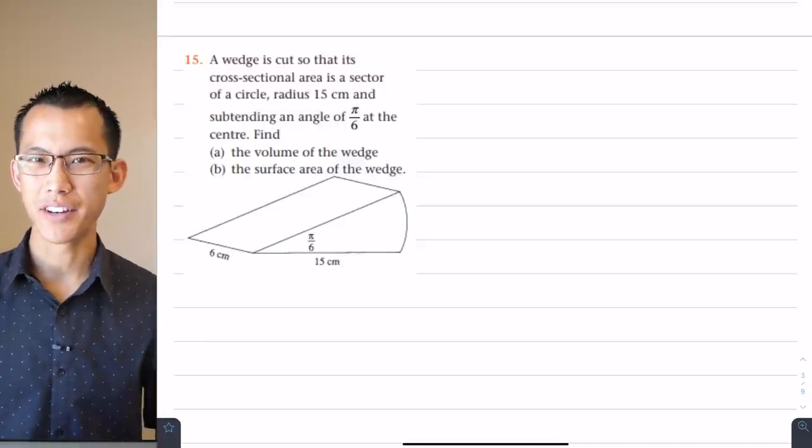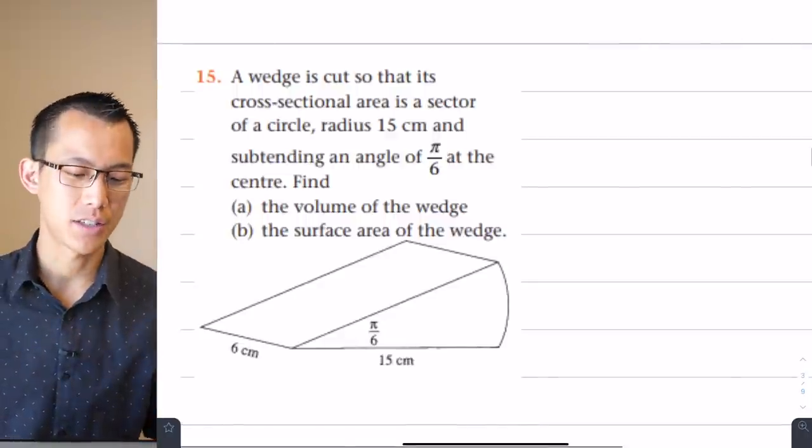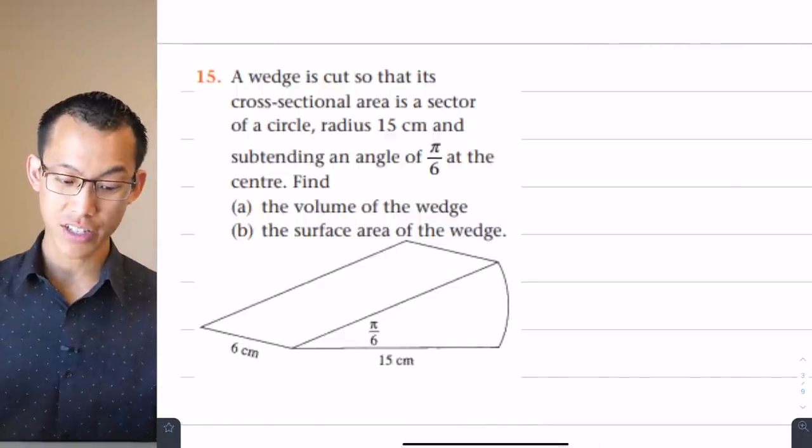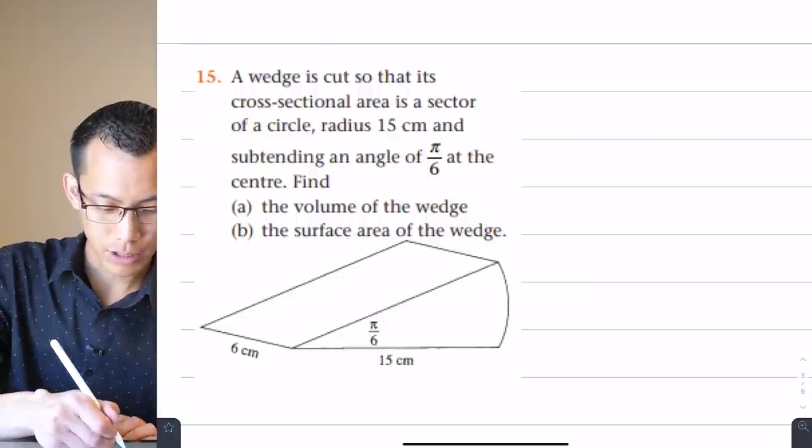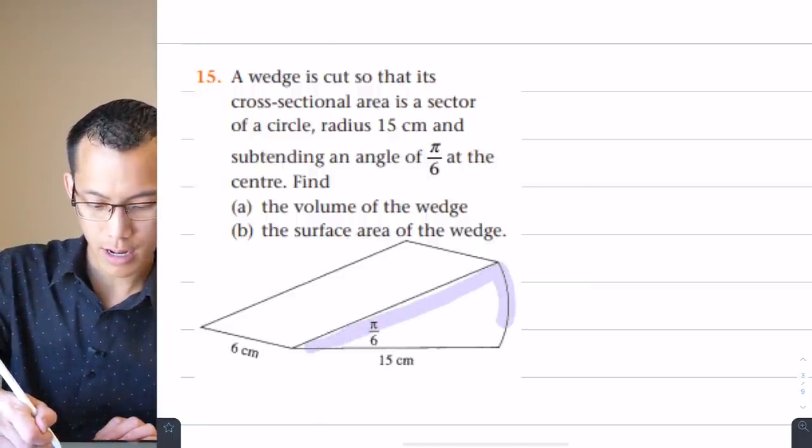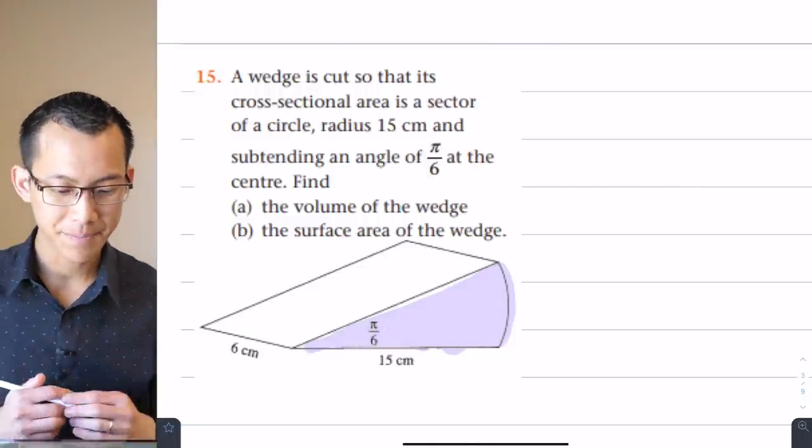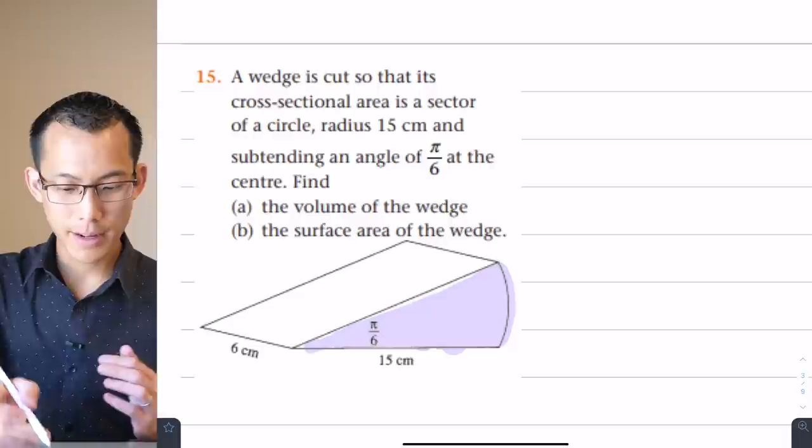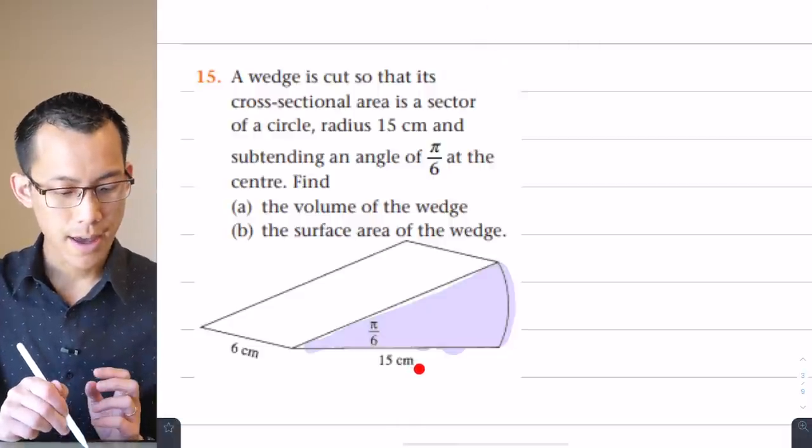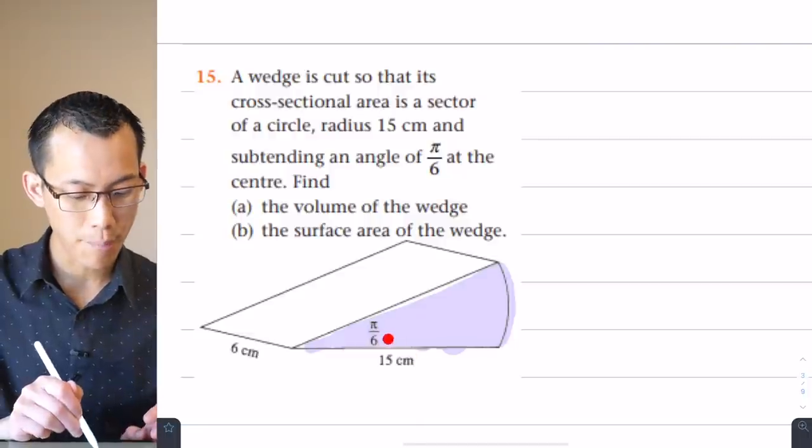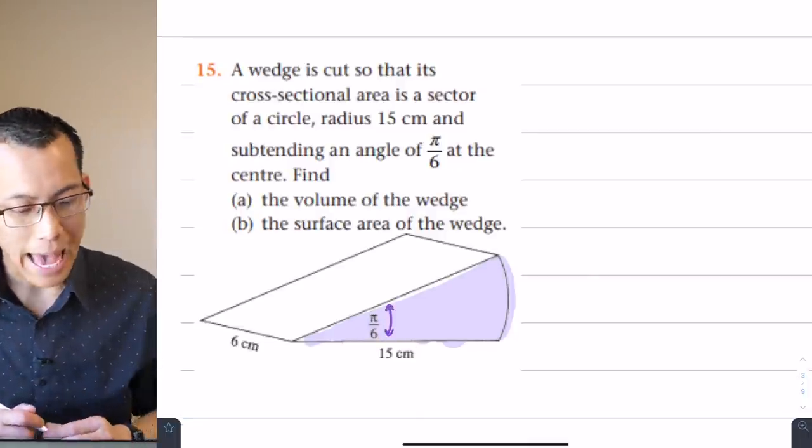This is another question that falls under radian measure. Let's have a look at it together. A wedge is cut so that its cross-sectional area is a sector of a circle. So that sector, that cross-sectional area, is this guy in here. That's the sector that they're referring to. Let's keep going. A radius 15 centimeters, so you can see that has been drawn in on the diagram for us, and it's subtending an angle of π/6. Let's just draw that in, π/6 there, at the center.